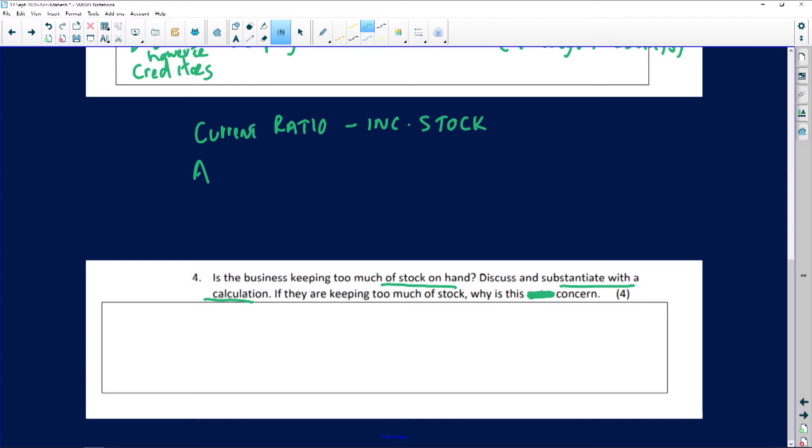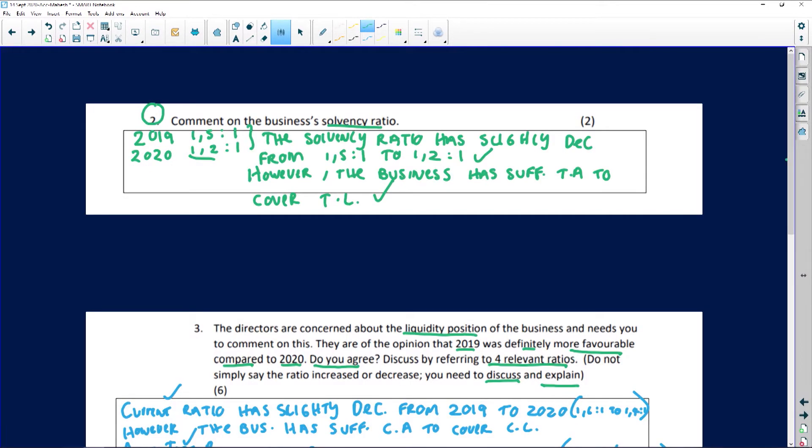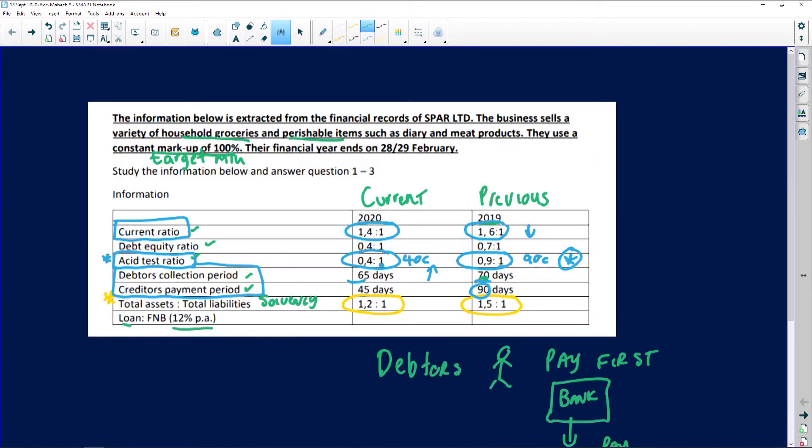And thereafter I'm going to look at the acid test ratio and your acid test ratio is your current assets excluding stock, without trading stock. Right, so if we look at your current ratio, let's go back to the information. The current ratio, remember we're looking at 2020, is 1.4 is to 1. So I just want to write that down, the current ratio 1.4 is to 1.